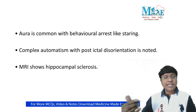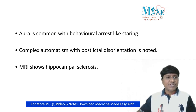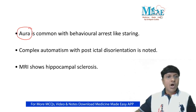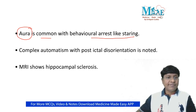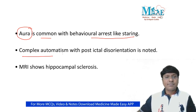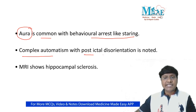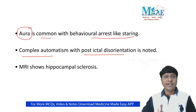In these patients they will also have aura. Aura is common with behavioral signs like staring. They will also have complex automatism with postictal disorientation — that is another important point related to mesial temporal sclerosis.